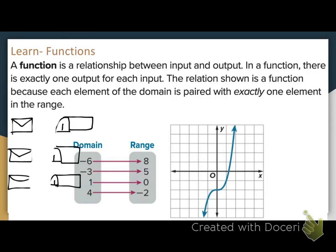Is it acceptable for one piece of mail to go to two different mailboxes without making a copy of it? No. Think of that like a function — this would not be a function. For it to be a function, each x value, each piece of mail, has to just go to one mailbox.